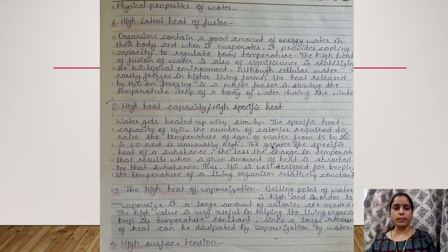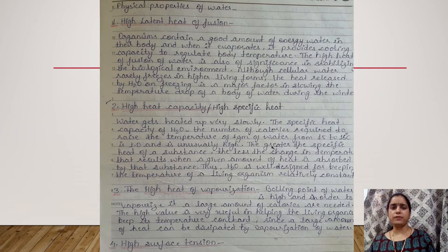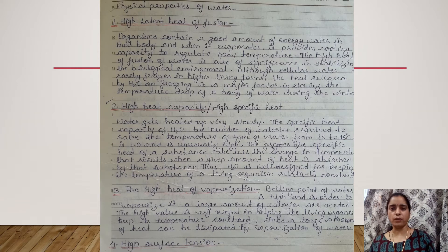The second physical property is high heat capacity, also known as specific heat. Water gets heated up very slowly. Specific heat or heat capacity is the number of calories required to raise the temperature of one gram of water from 15 degrees Celsius to 16 degrees Celsius, and that number is one kilocalorie.